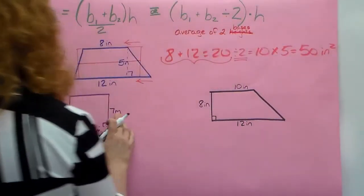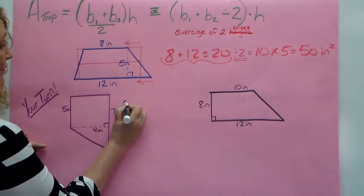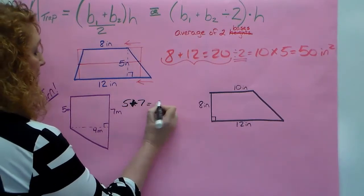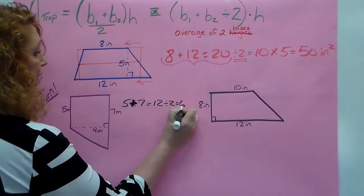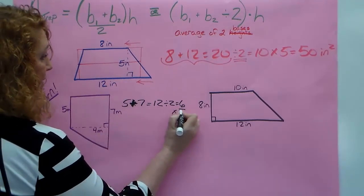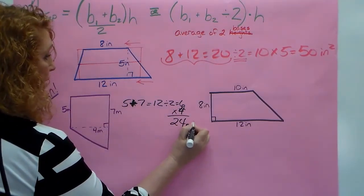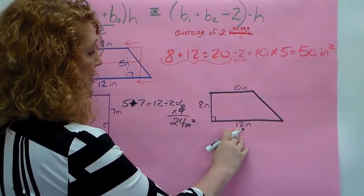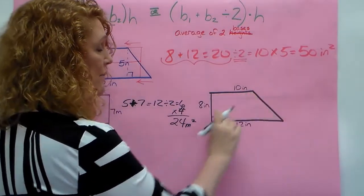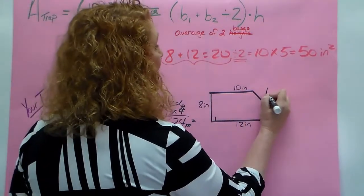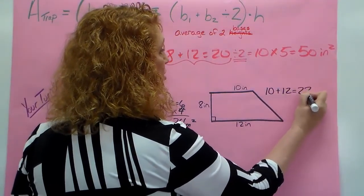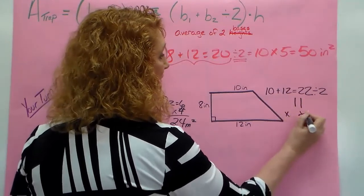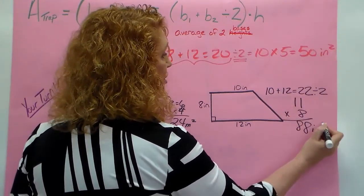All right, so here I'm going to find the average of my two bases. 5 plus 7 is 12 divided by 2 is 6 times my height is 4. 6 times 4 is 24 meters squared. Then this one - that is my phone, please ignore it. This one, my two parallel sides here I'm going to add together to find the average. I've got 10 plus 12, that's 22 divided by 2, so I've got 11 times my height 8 which is 88 inches squared.